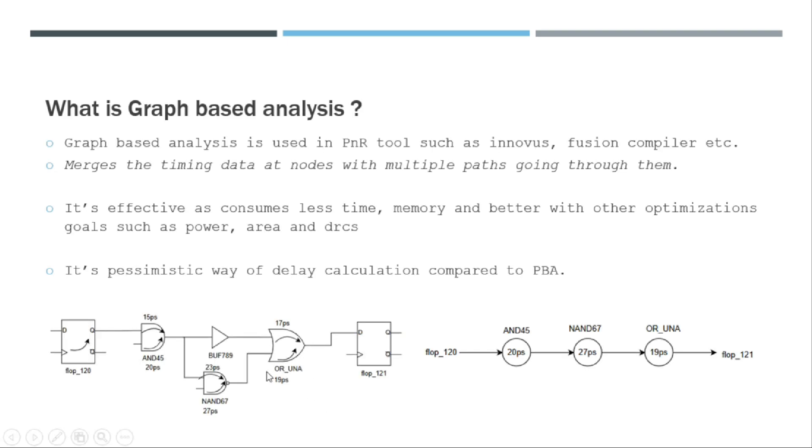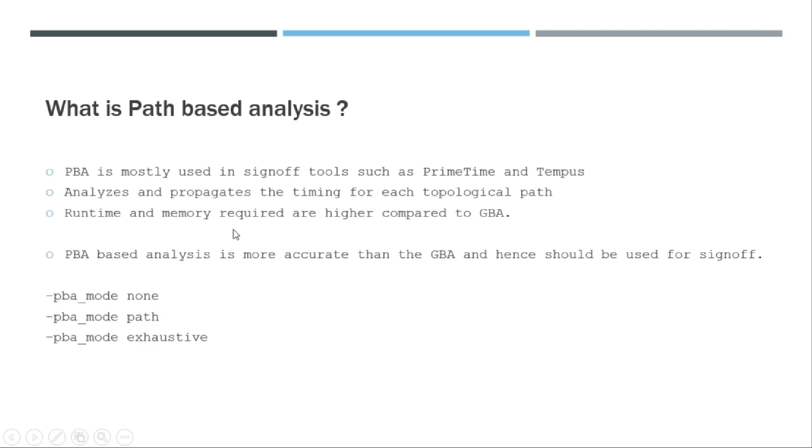So it analyzes and propagates the timing for each topological path. As I said, in case of PBA, for each topological path - this is actually a topology, this is actually the layout - for each topological path, it will actually propagate the delay and calculate the delay value based on that. But the runtime and the memory required are very high compared to the GBA in case of PBA analysis.